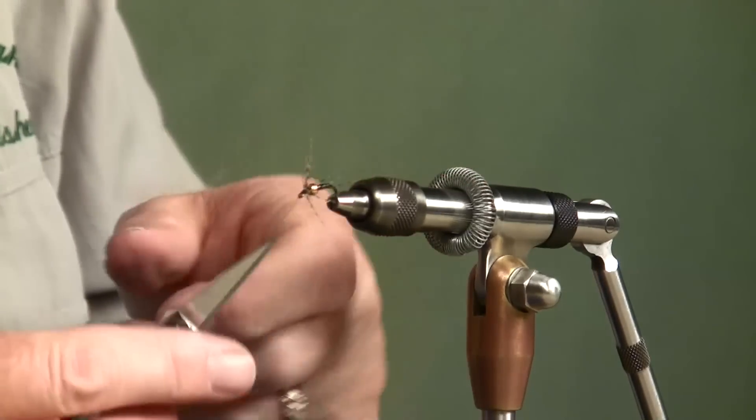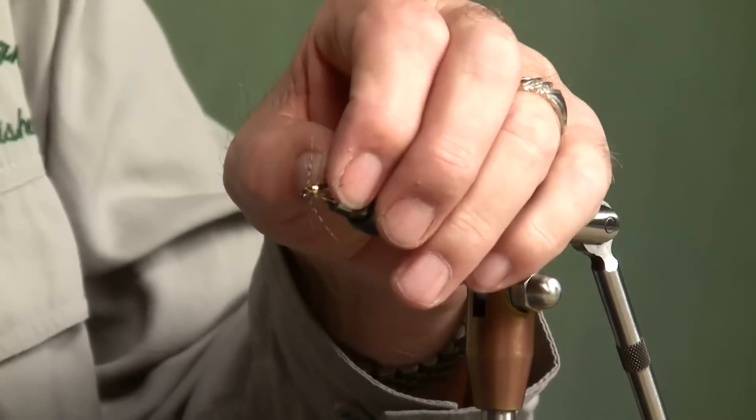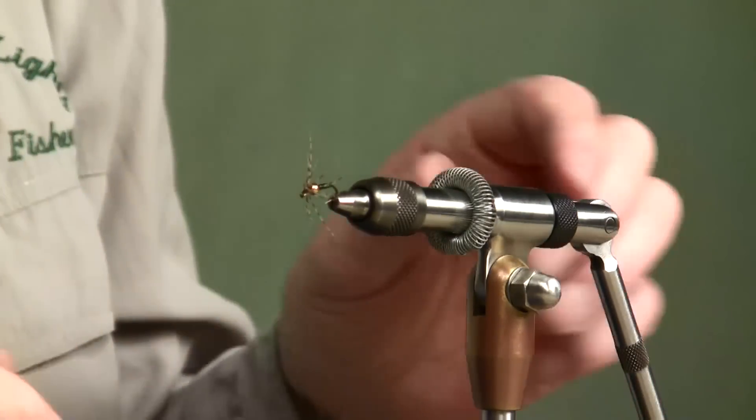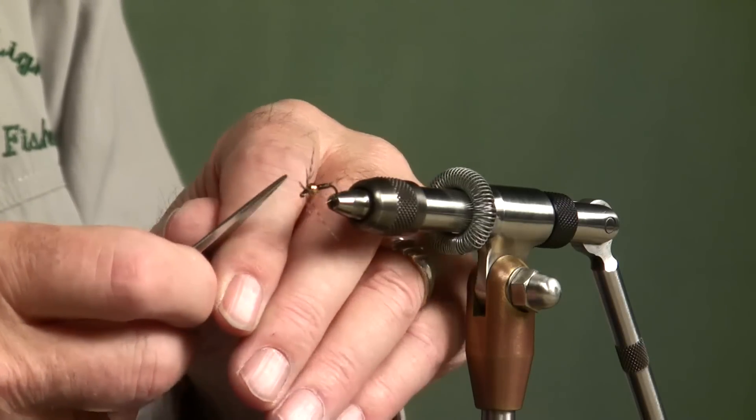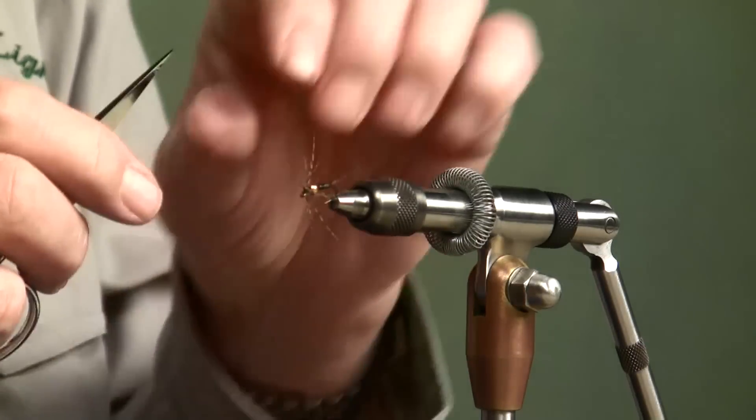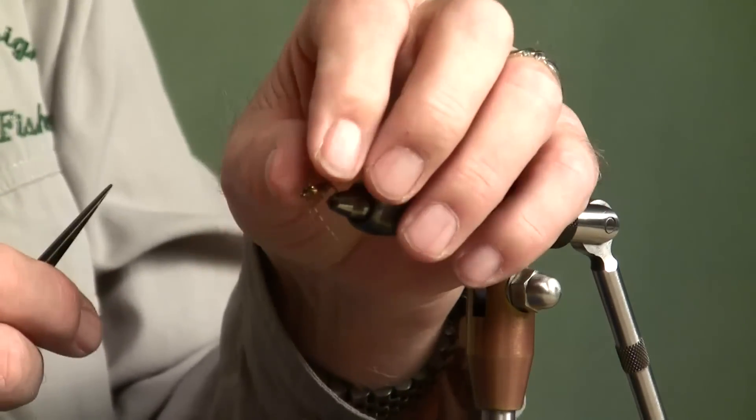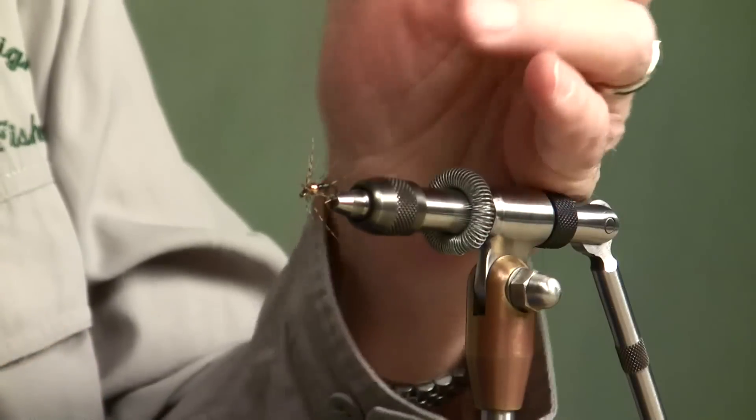Now, what this does, the thing I really like about this, and I've seen a few flies like this, as this fly goes through the water, the fibers will collapse over that bead, but they will not totally collapse flat around the body of the fly. And they will work faster in the water this way, giving that kicking motion.